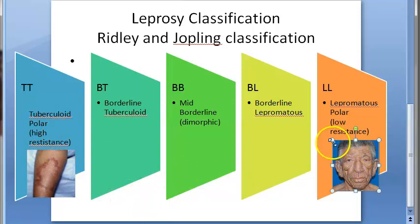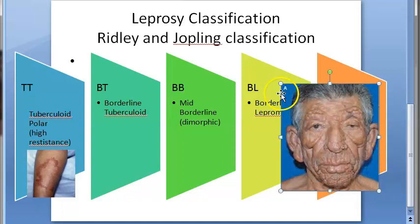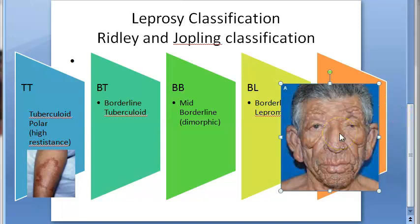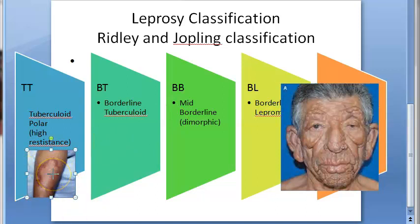In lepromatous leprosy, there are symmetrical multiple nodules, macules, papules, and diffuse infiltrates. The nodular lesions coalesce and give a leonine facies — like a lion's face. The lesions are hypoesthetic or anesthetic, but sensory disturbance is not as distinct as in tuberculoid leprosy; the patient can still feel.